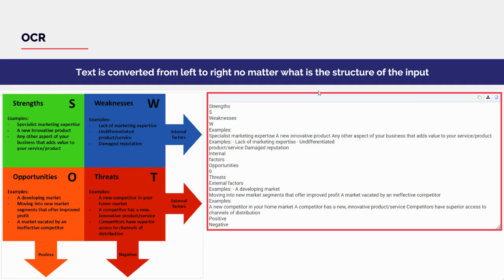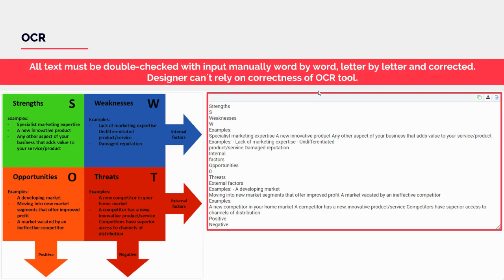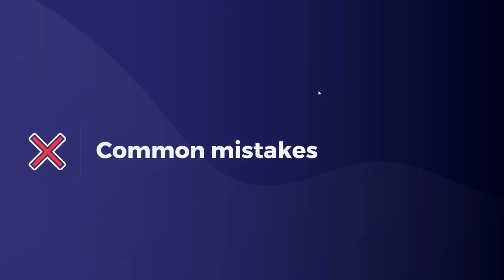One important thing to know about OCR is that text is converted from left to right regardless of the structure of the input. As shown in the example, the text recreated by OCR may not be in the correct logical order, so you must place recreated parts correctly in your slide. All OCR text must be double-checked with the input manually, word by word and letter by letter. This tool can save a lot of time, but you must guarantee the quality of the recreation.